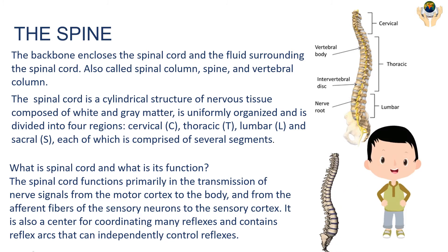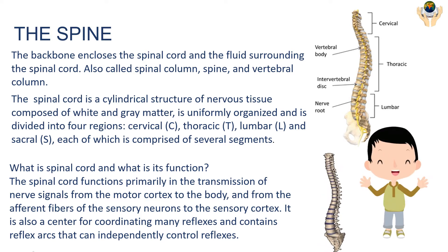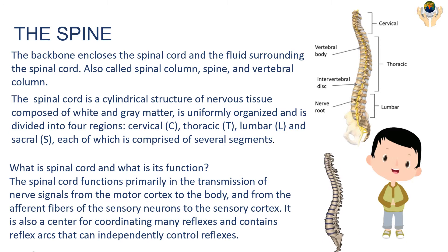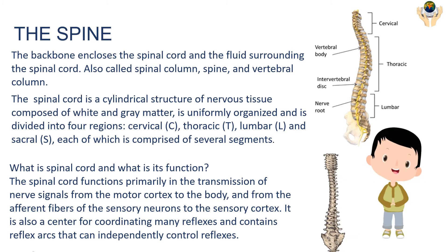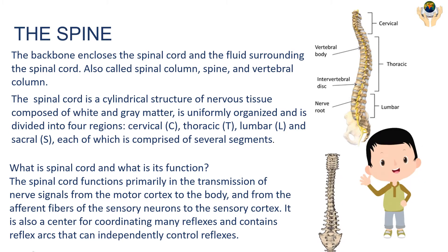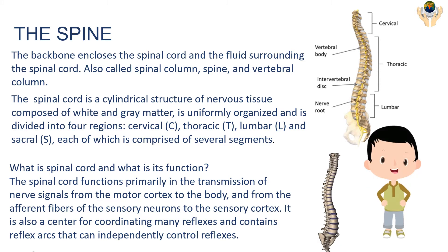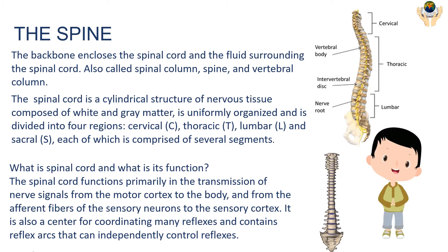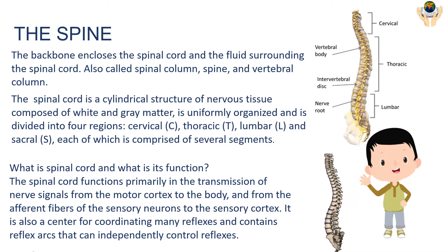The spinal cord functions primarily in the transmission of nerve signals from the motor cortex to the body and from the afferent fibers of the sensory neurons to the sensory cortex. It is also a center for coordinating many reflexes and contains reflex arcs that can independently control reflexes.